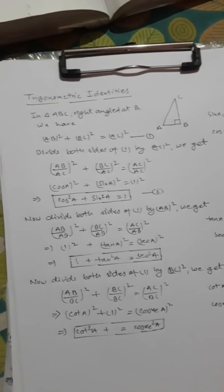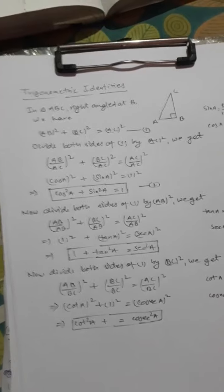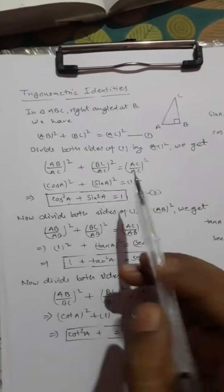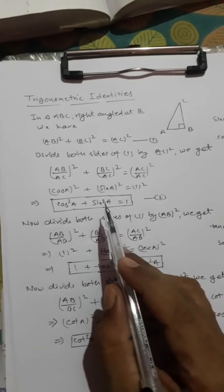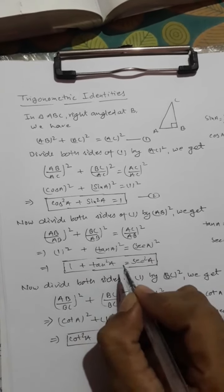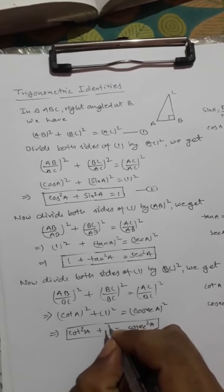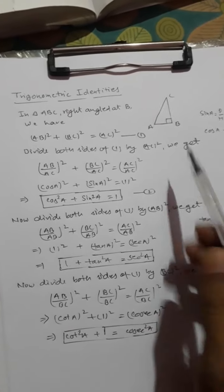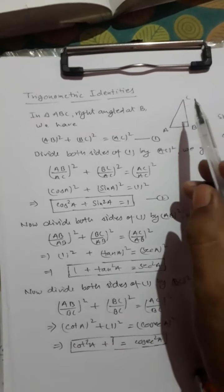Hello students, good morning. Here we are going to prove trigonometric identities by geometrical method — that means how to derive these identities. We have basically three identities: sin²a + cos²a = 1, second is 1 + tan²a = sec²a, and third is 1 + cot²a = cosec²a. We can prove all of these by geometry.